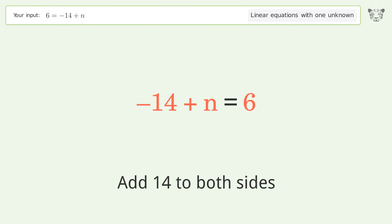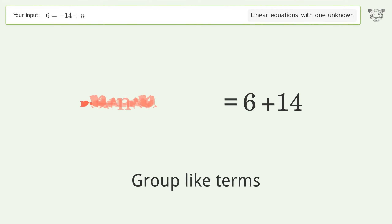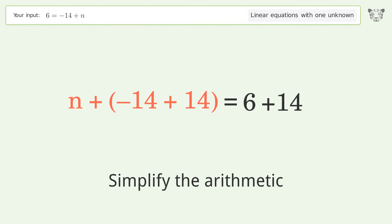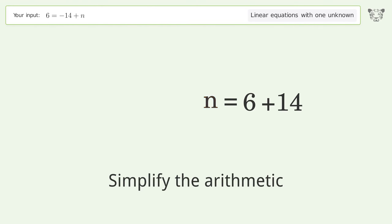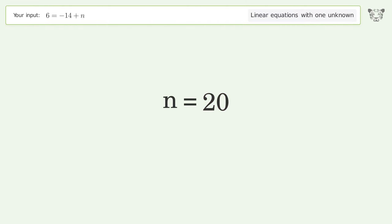Group like terms, then simplify the arithmetic. And so the final result is n equals 20.